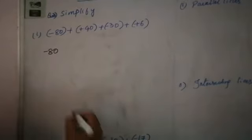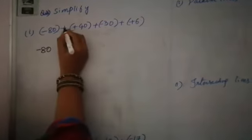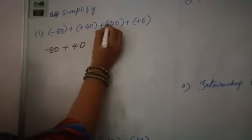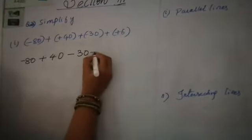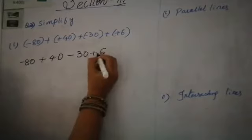Minus 80. The next is plus into plus — plus 40. Plus into minus — minus 30. Plus into plus — plus 6.